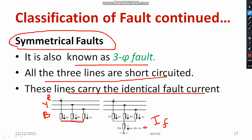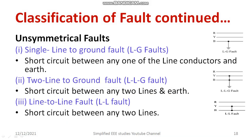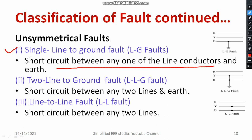Symmetrical fault is the most dangerous fault, but its occurrence is rare. Now let us discuss unsymmetrical fault. The first point is single line to ground fault, also known as LG fault or SLG fault. Here, one line is short circuited between any one line conductor and the ground — it may be Y and ground, or R and ground. These are generally known as single line to ground fault, and it is actually the most commonly occurring fault.